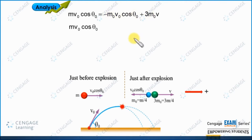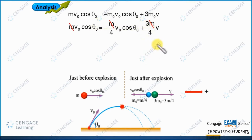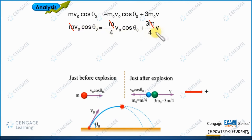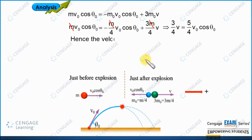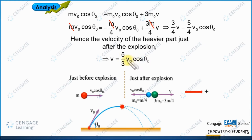Substituting the masses m by 4 and 3 m by 4, we can observe that m cancels throughout. This gives us 3 by 4 times v on one side, and 1 by 4 v naught cos theta naught plus v naught cos theta naught on the other side. That means 3 by 4 v equals 5 by 4 v naught cos theta naught. Solving for v, the velocity of the heavier particle just after the explosion is 5 by 3 v naught cos theta naught. This is the required answer.